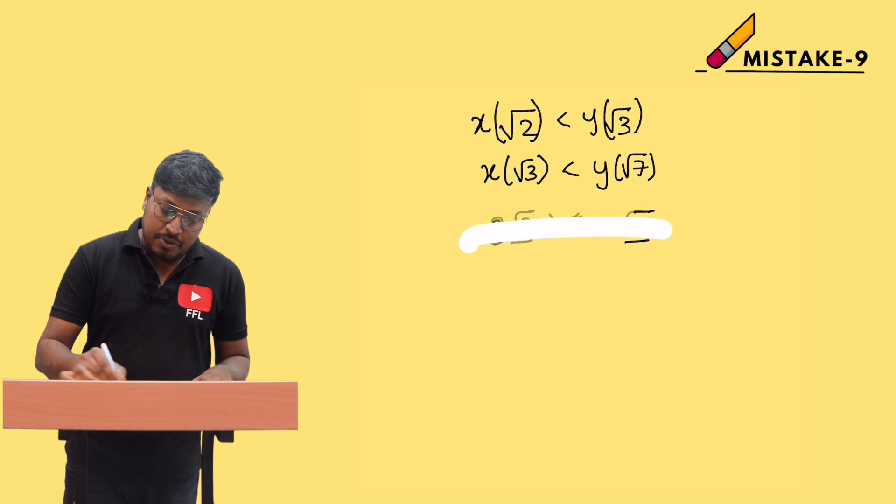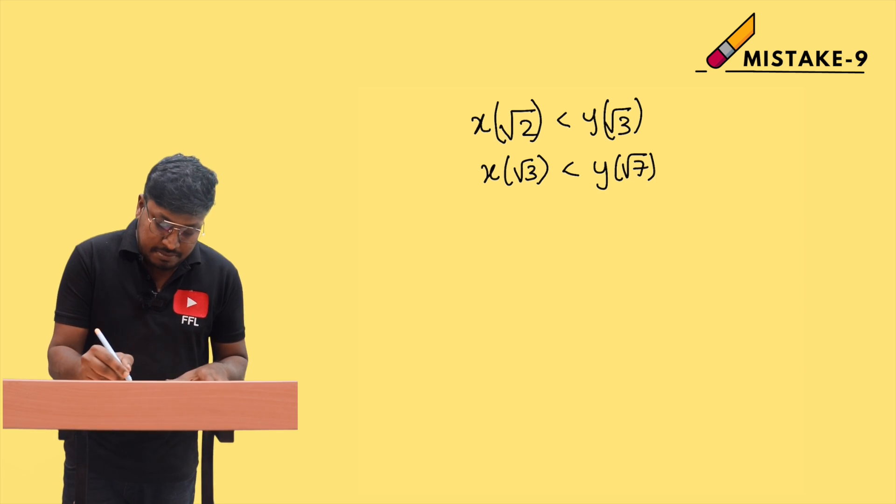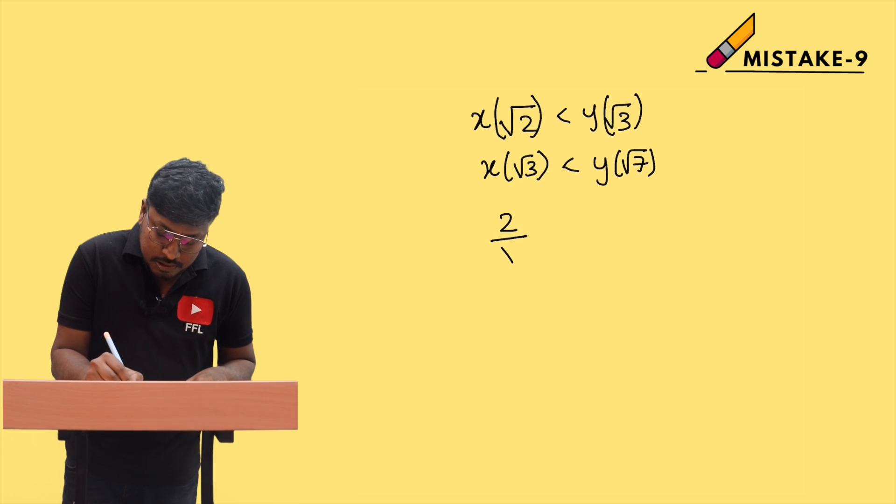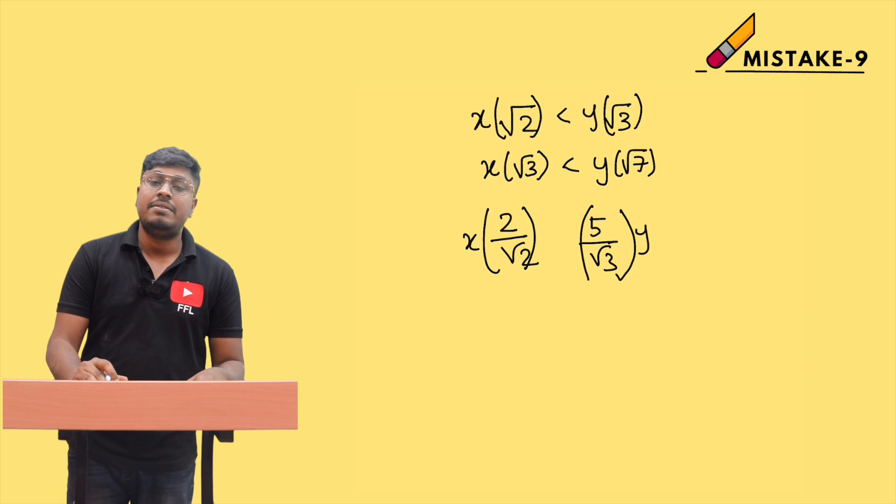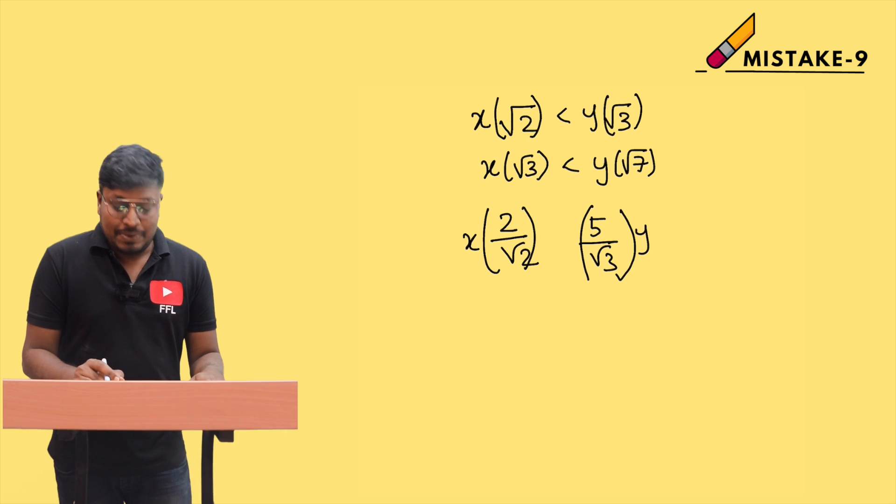While learning equation topics, you may see these kinds of numbers: 2√2 and 5√3. We need to compare x value 2√2 and y value 5√3 to say which is greater or less.